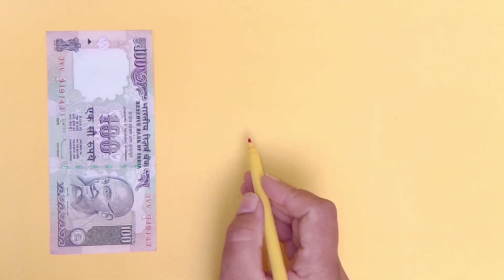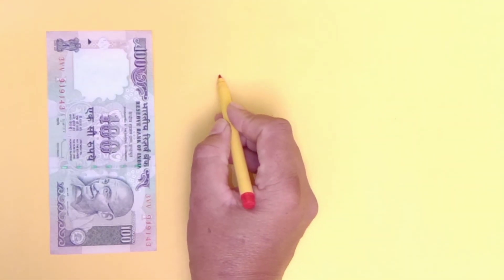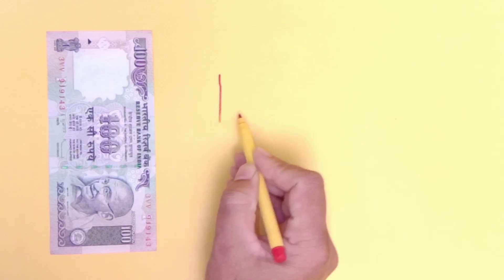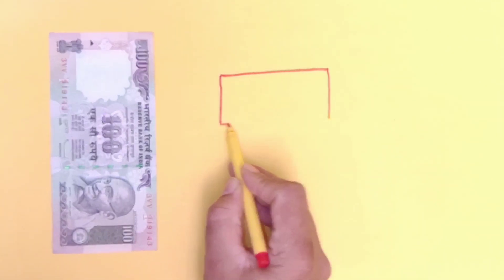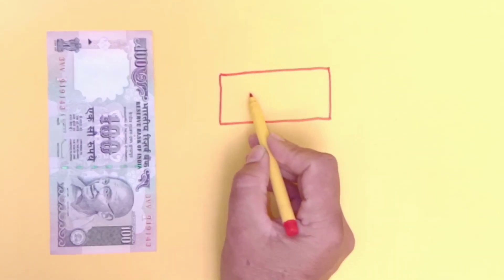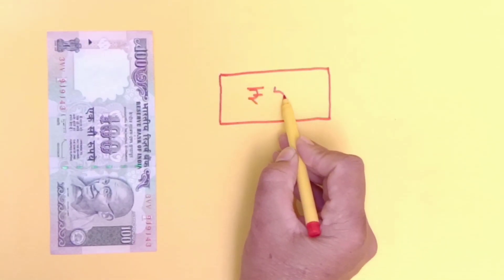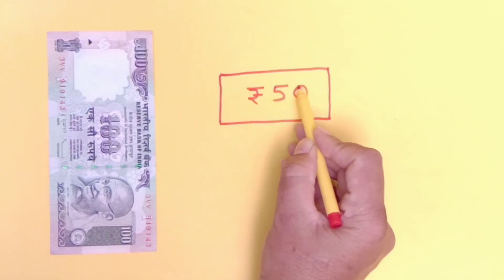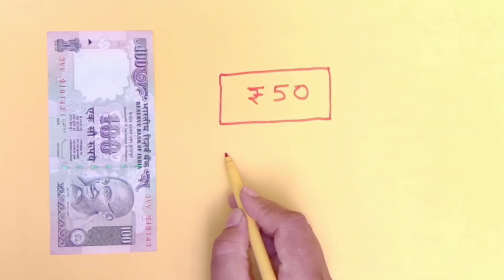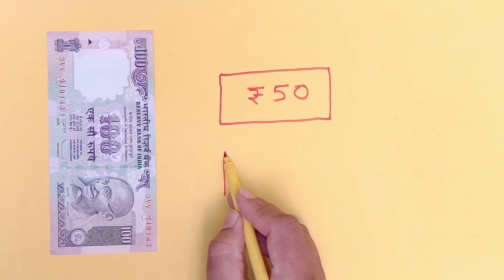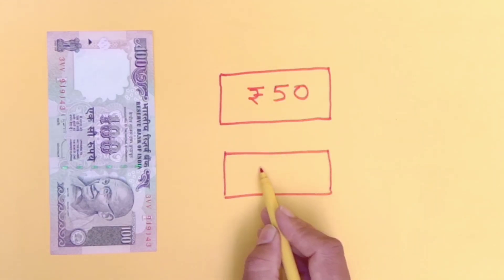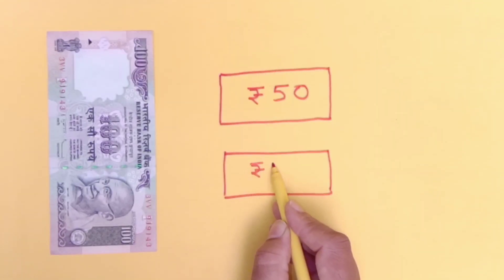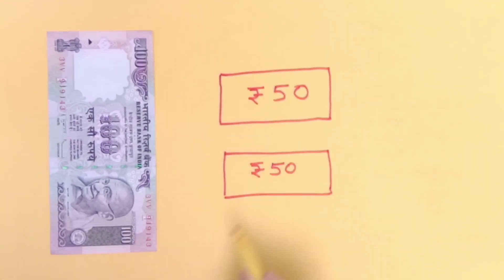Here I will draw notes of rupees 50 in place of rupees 100. This is our first note of rupees 50. Let's draw 1 more note of rupees 50. Together, these 2 notes of rupees 50 are equal to the value of rupees 100.